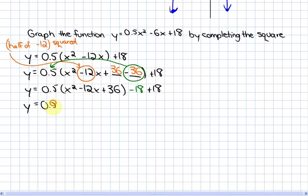When we collect the like terms and simplify this and factor, we're left with y equals 0.5. This is a perfect square trinomial of x minus 6 times x minus 6, and these become absolutely nothing. So our completed square is y equals 0.5 times x minus 6 squared.